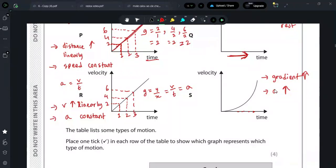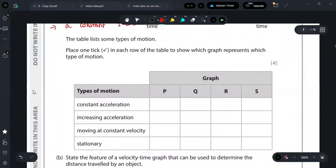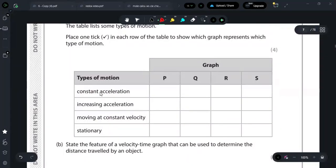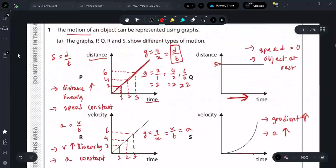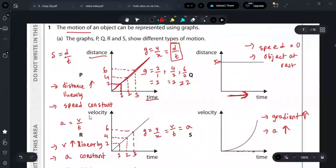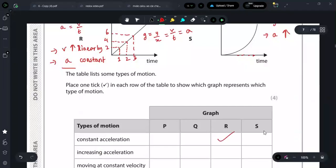Let's solve the question now. The table lists some types of motion. Place one tick in each row of the table to show which graph represents which type of motion. First here, we have constant acceleration. Just now we saw constant acceleration at all times. Constant acceleration is for R. So R.